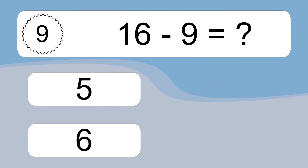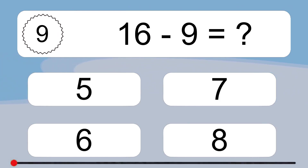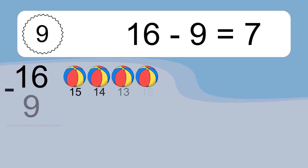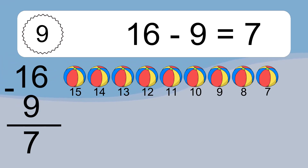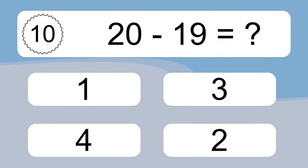16 minus 9 equals what? 16 minus 9 equals 7. Let's count it: 15, 14, 13, 12, 11, 10, 9, 8, 7.